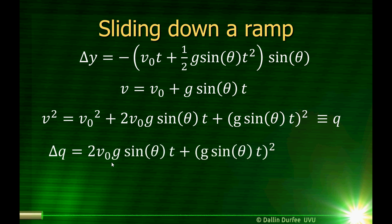How does q change as we go down the ramp? When we go from the top of the ramp to the bottom of the ramp, the change in q is just how this changes from time t equals zero to the final time. At time t equals zero, it's just v-naught squared. At the final time, it's this expression. When we subtract and take the difference, the v-naught squared goes away. So that's how much velocity squared changes as we go down the ramp.